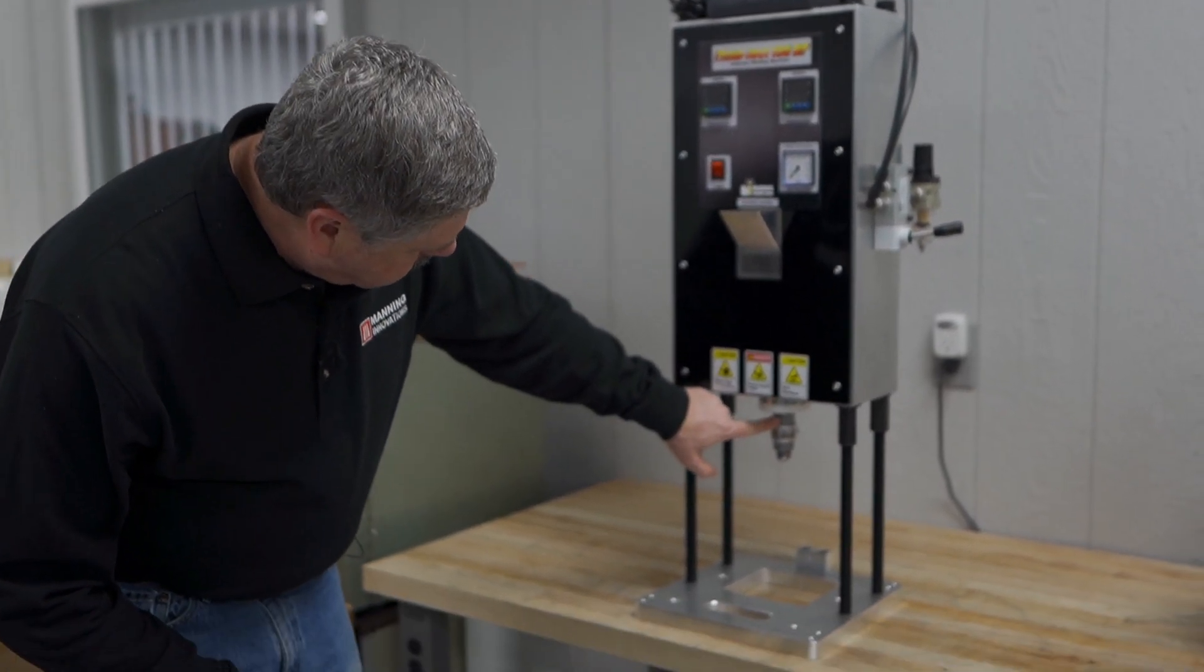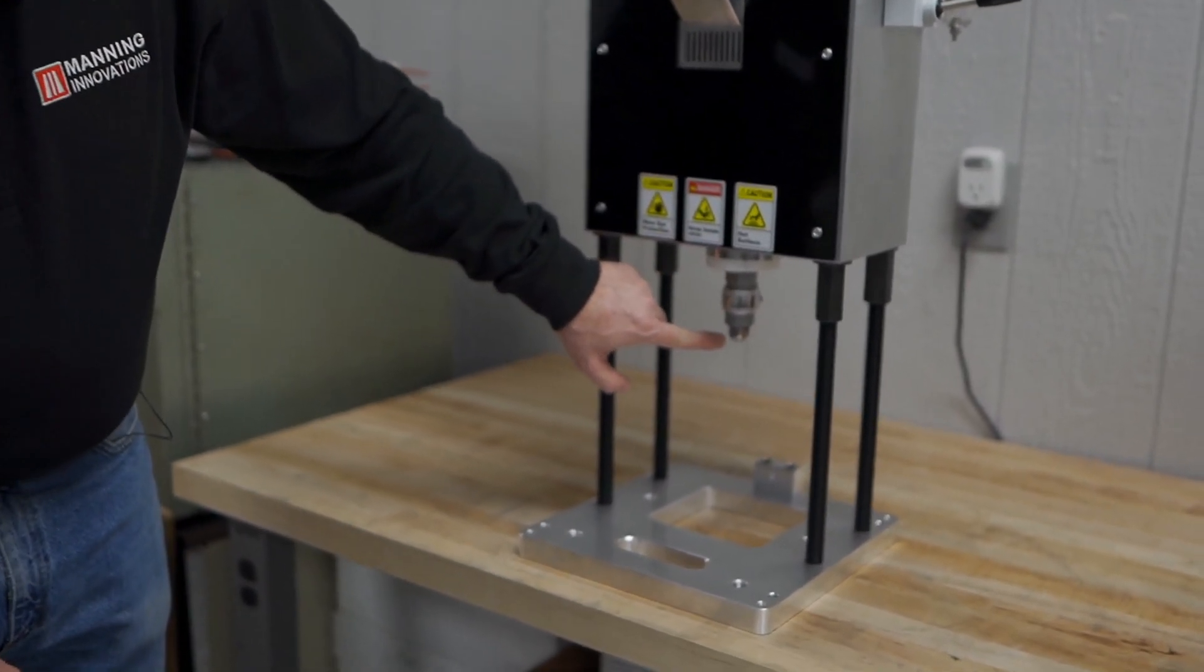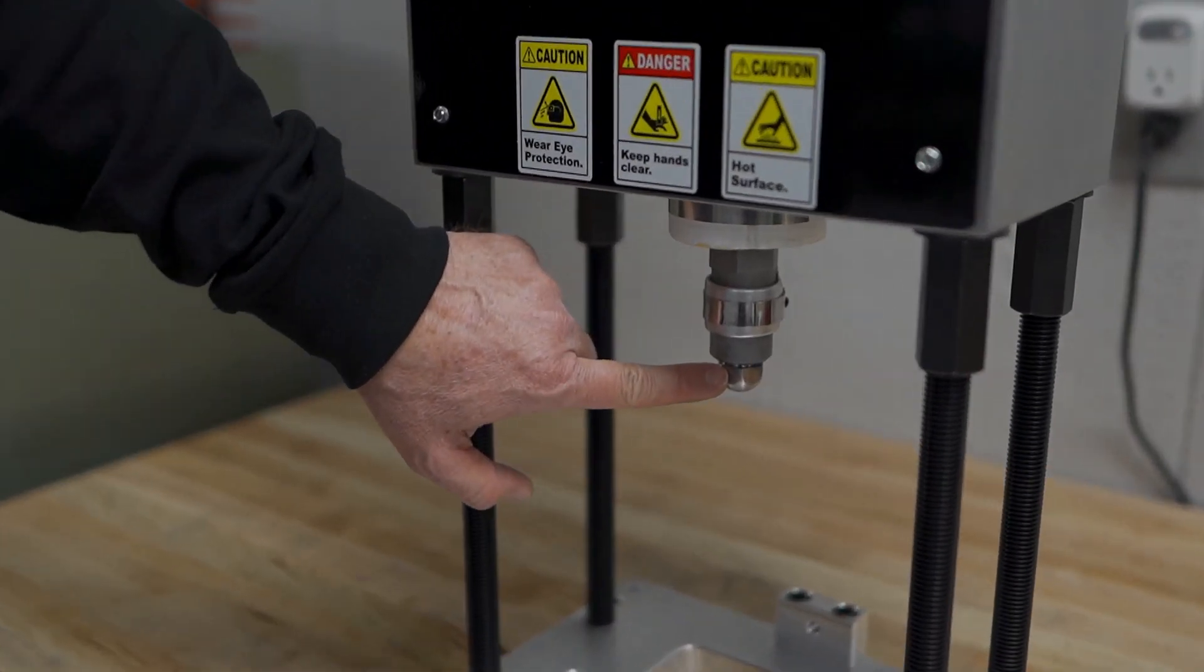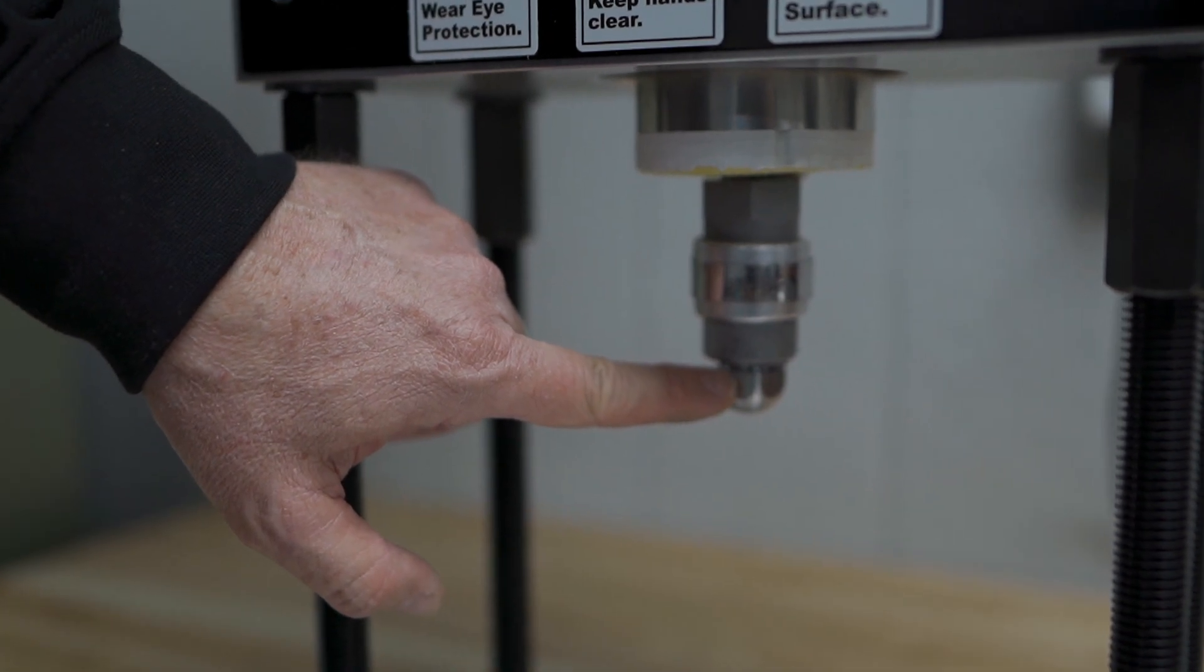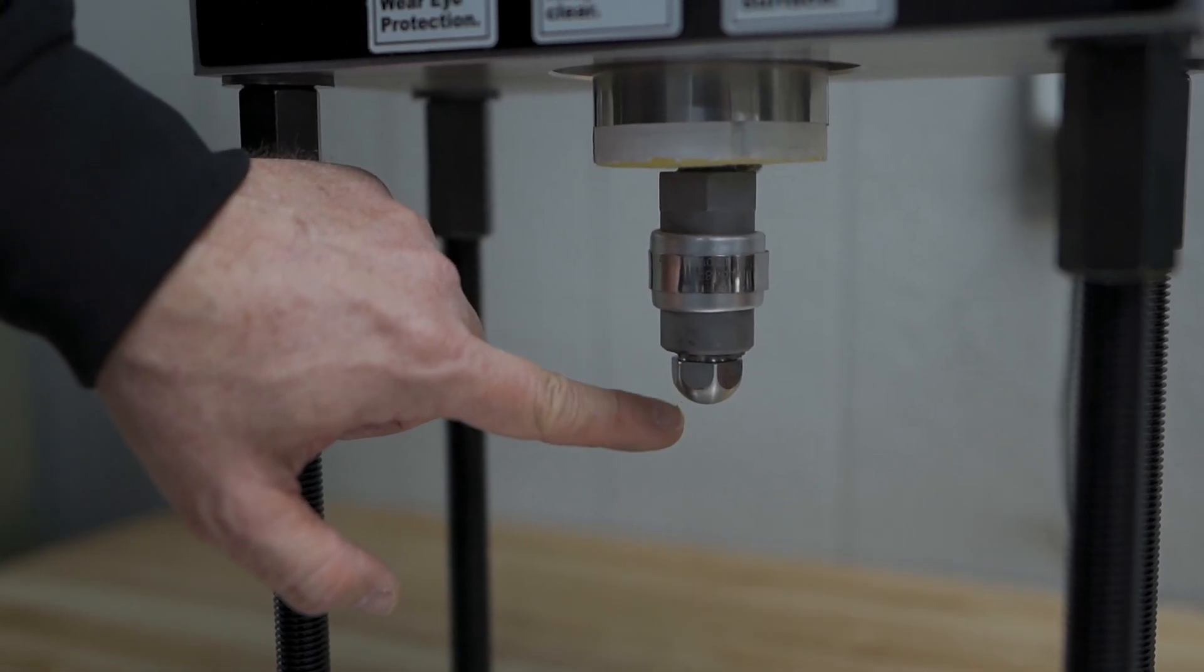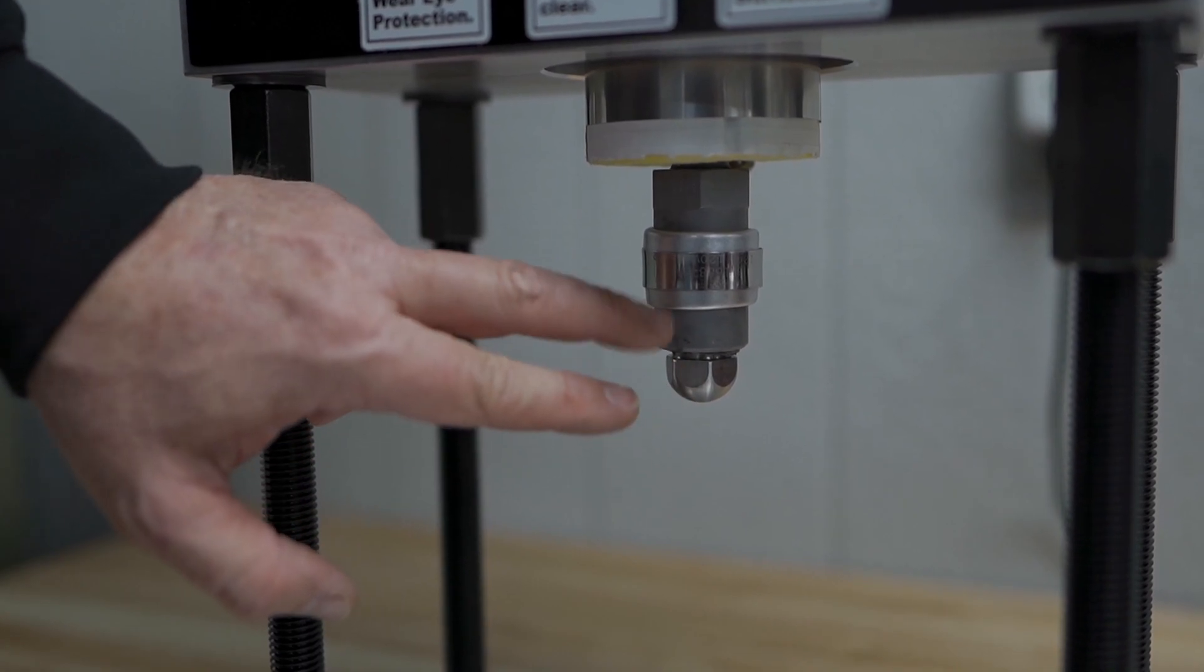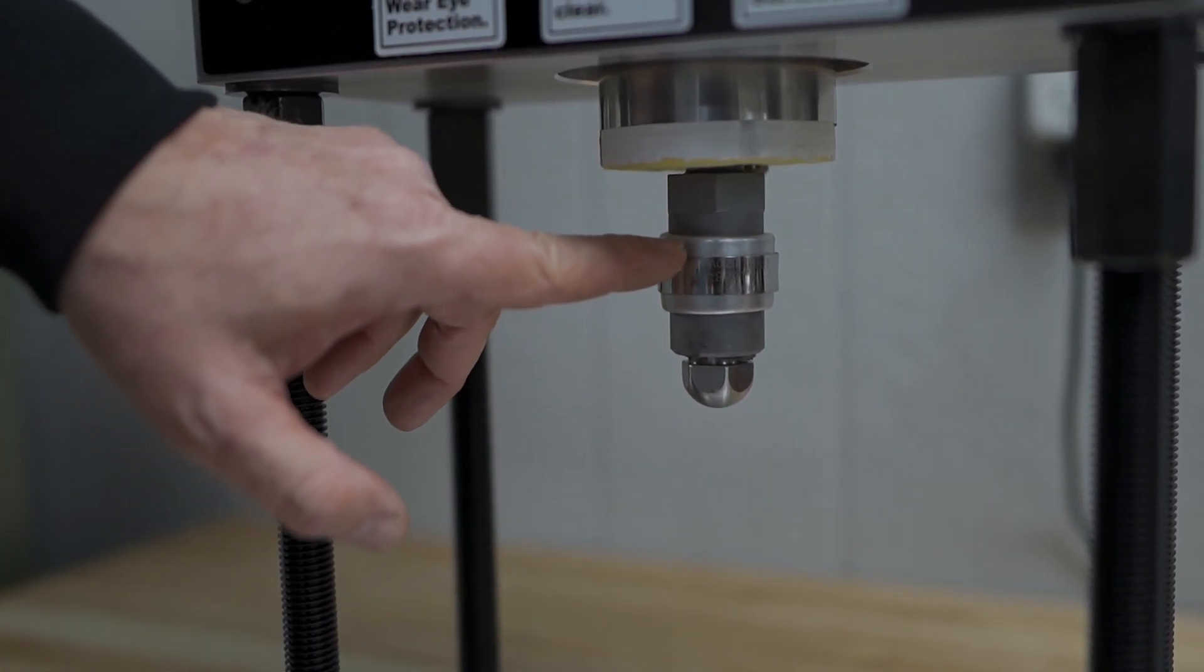It consists of a nozzle body and a nozzle tip. And the advantage of this, whether you're mixing color or whether you're not, is the tip can be interchanged without having to remove the heater band.